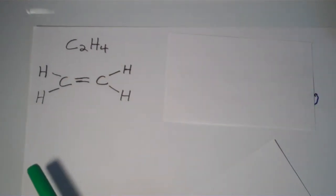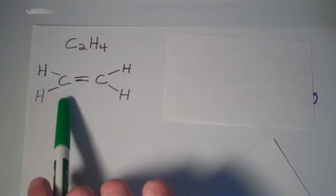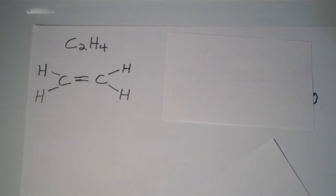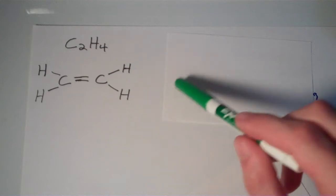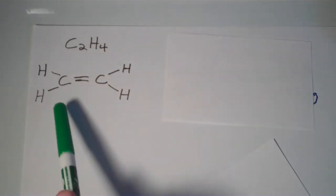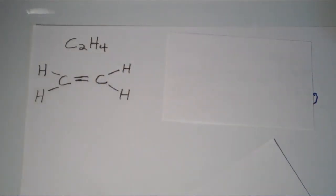And you will find that the two central carbons are doubly bonded to one another. So there's these single covalent bonds between carbon and hydrogen, but then you have this double covalent bond between these two carbons.